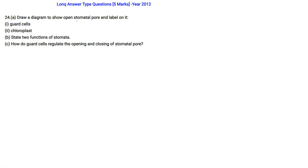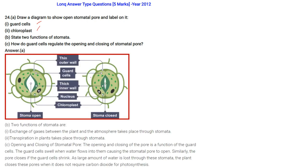Draw a diagram to show an open stomatal pore and label the parts. The stoma can be open or closed. The diagram shows the thick inner wall and thin outer wall of the stoma, guard cells, nucleus, and chloroplast.